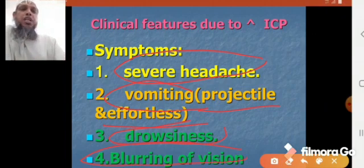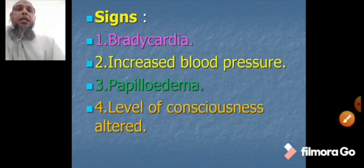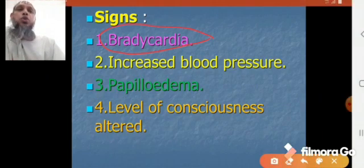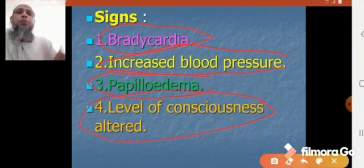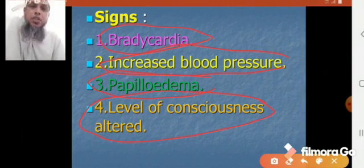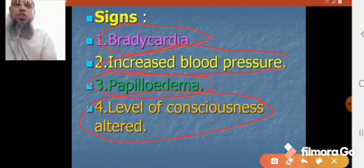The signs due to increased intracranial pressure are: number 1, bradycardia; number 2, hypertension or increased blood pressure; number 3, papilledema; and number 4, altered level of consciousness. These are the symptoms and signs — that is the clinical features — due to increased intracranial pressure in case of brain abscess.